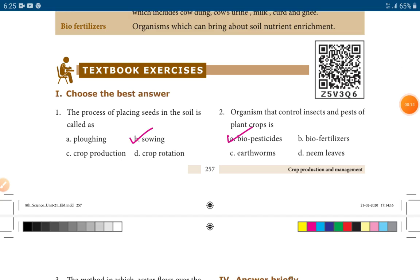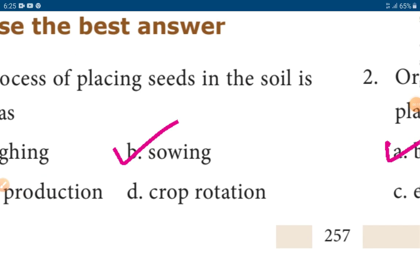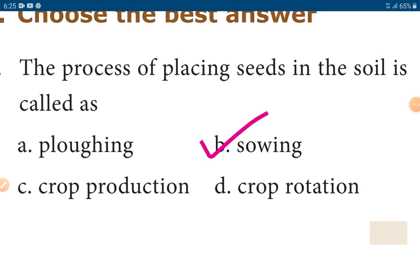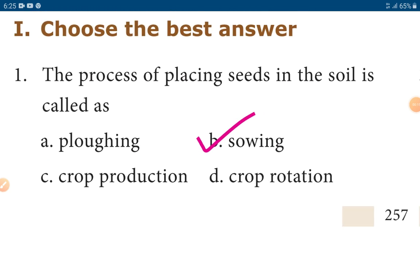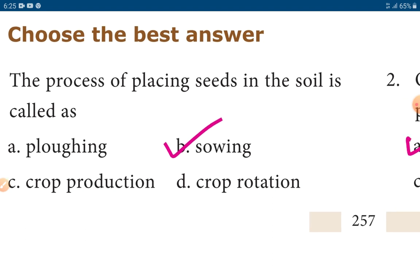First, choose the best answer. First question: The process of placing seeds in the soil is called as sowing — option B.